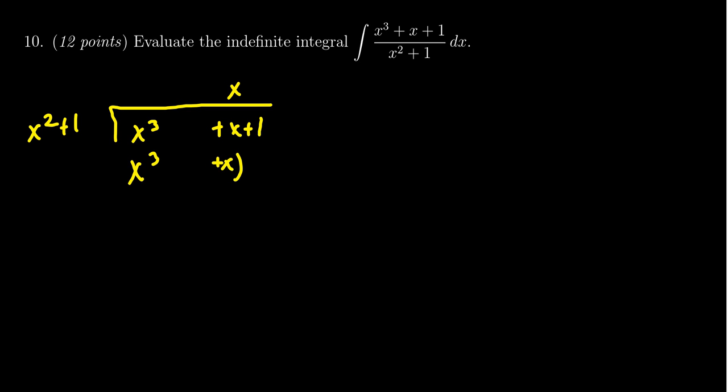But we're actually going to subtract this from above. So the x cubes are going to cancel. x cubed minus x cubed. But I also get x minus x as well. So they cancel out again. And so then the next thing to do is to bring down the 1. So we get a 1 right here.